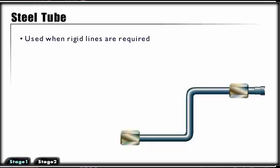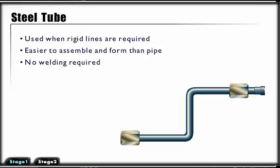Tubing is used as a conductor when rigid lines are required. It is often easier to assemble and form and requires no welding to achieve leak-free connections.